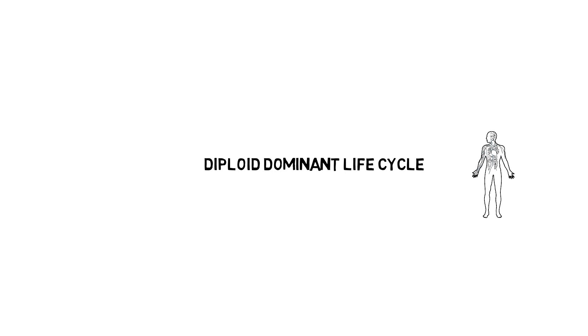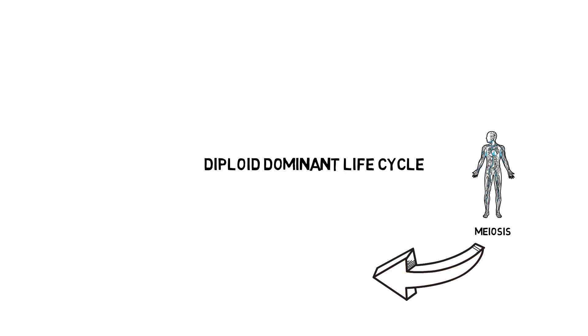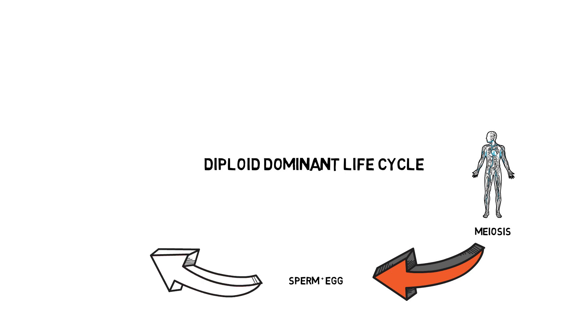The first one we're going to look at is the diploid life cycle. This is the one most people know about, and it's where the multicellular diploid stage is the most obvious life stage of the organism and the only haploid cells are the gametes. This is used by humans and most animals. Early in the development of an animal embryo, special diploid cells called germ cells are made in the testes or ovaries. Germ cells can divide by mitosis to make more germ cells, but then some of them are able to undergo meiosis, making haploid gametes which are sperm and egg cells.